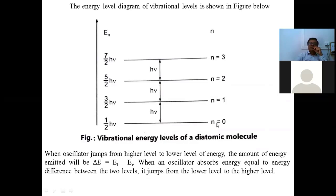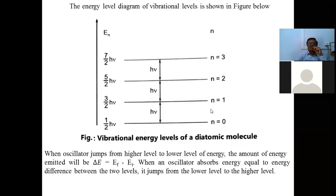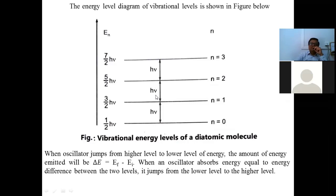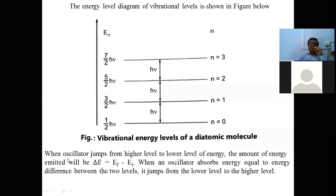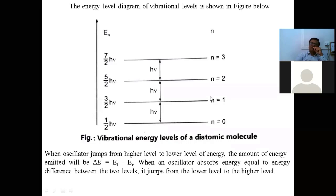The figure shows the vibrational energy levels of the diatomic molecule. Using Equation 4: for n = 0, energy = ½hν; for n = 1, energy = (3/2)hν; for n = 2, energy = (5/2)hν; for n = 3, energy = (7/2)hν, and so on. The energy difference between any two successive levels is equal to hν, so the separation between levels n = 0, 1, 2, 3 is the same.